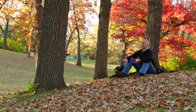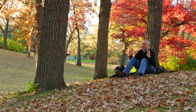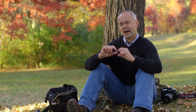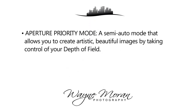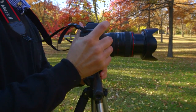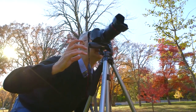I frequently get the question: how do I use my camera? Most people are actually shooting on complete auto mode and trying to take that next step. But when you go to photo classes at the photo store, they want to jump you quickly to shooting everything in manual. I encourage people to take baby steps to that next level. Aperture priority is considered a semi-auto mode, but it allows you to create artistic, beautiful images by taking control of your depth of field. I shoot probably 90 to 95 percent of my images in aperture priority.